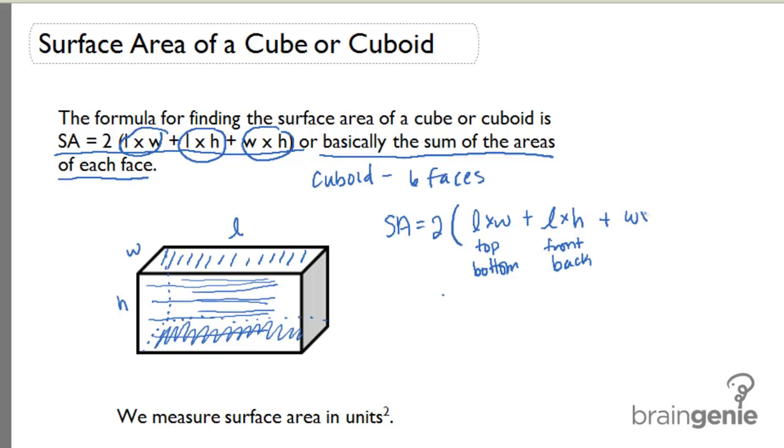Lastly, we have width times height. Width times height is the shorter side of the top times the height, which is basically giving us these areas right here, which are the sides of the cuboid. There are two sides. There's a front and a back, which is two faces, and a top and a bottom, which is two faces. If I add these up, that gives me my six total faces.